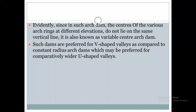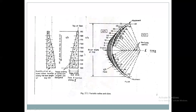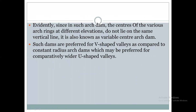Variable center arch dams are preferred for V-shaped valleys, as compared to constant radius arch dams which are preferred for comparatively wider U-shaped valleys. So the shape of the valley determines the type of arch dam used: V-shaped valley — variable radius arch dams are preferred; U-shaped valley — constant radius arch dams are preferred.